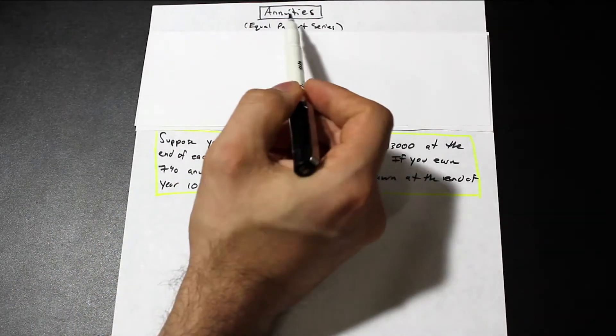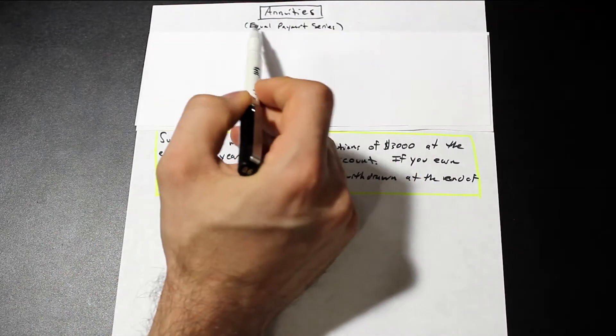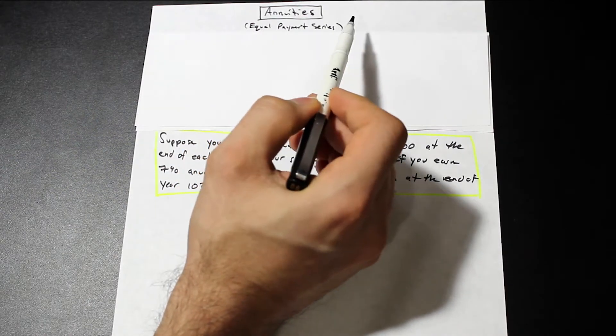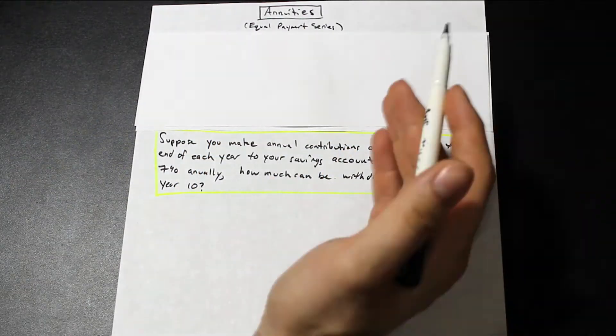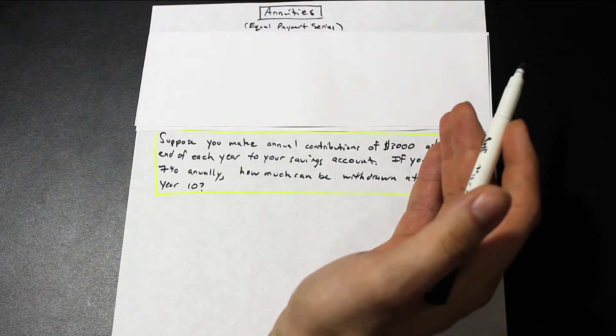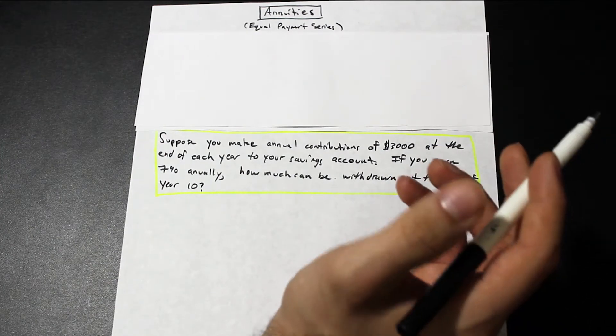So in this video, we're going to make a video on annuities, or what are also known as equal payment series. In the previous video, when we did F given P, so the future value given the present or present given the future, in those videos, in those techniques...